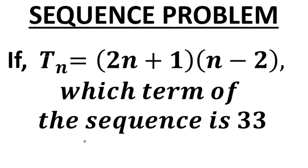This video is about finding the term of the sequence when the value of that term is 33. This is a sequence problem: if the nth term is equal to the quadratic expression (2n + 1)(n - 2), which term of the sequence is 33? That is the question — let's begin.